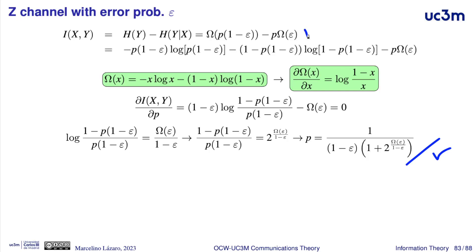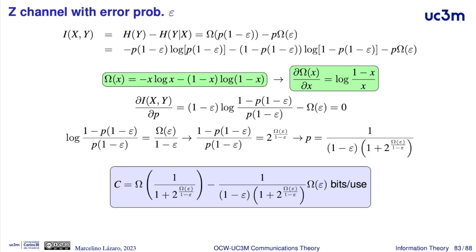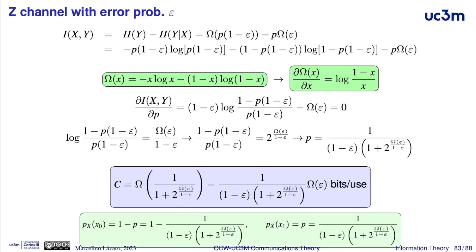The channel capacity will have the expression of the mutual information for this optimal value of p: the binary entropy of p times (1 minus epsilon), minus p times the binary entropy of argument epsilon, in bits per use. The input distribution associated with this channel capacity is the probability of x1 equal to p, and the probability of x0 equal to 1 minus p. In this way, for channels with a binary input, it is relatively simple to compute analytically the channel capacity.